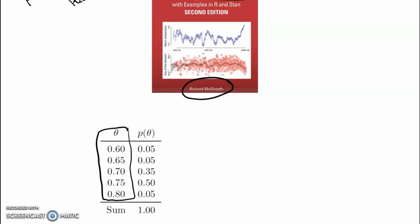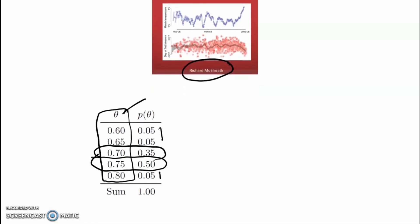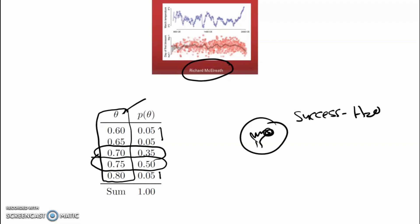I begin by assigning prior probabilities to each one of these values of theta. My best guess, if there are only five possible values of theta, is that 0.75 is most likely, there's a decent chance it could be 0.70, and not very much chance at all for the other three values. Then I do a little experiment. The way McElreath describes it, he takes a little globe, tosses it up in the air, grabs it, and wherever his thumb lands he records that as being either water or land, where success is water. I just went on Google, found that the proportion of the earth's surface covered by water was 0.71, and used R to take a random sample based on the binomial — that gave me four water and six land. Y equals 4, N equals 10.